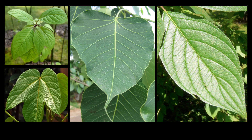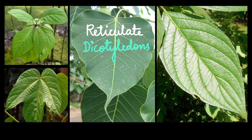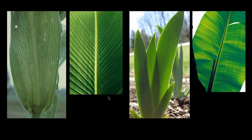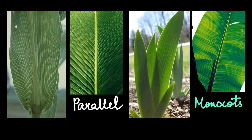Next is venation. Venation is the arrangement of veins on the leaves, and you can see different patterns in all these leaves. Veins are very important because they help in supporting the structure of the leaf and also serve as transport channels to bring food and water into the leaf. When the veins branch and form a network, such venation is called reticulate venation. It has been noted that dicots usually show reticulate venation.